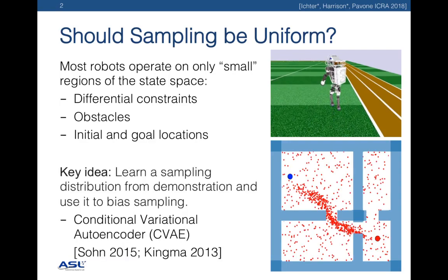As such, we propose to learn to focus our samples in these regions from experience by leveraging methods from unsupervised learning, and in particular, the conditional variational autoencoder. Using these methods allows very general problems to be learned, including those with complex dynamics.